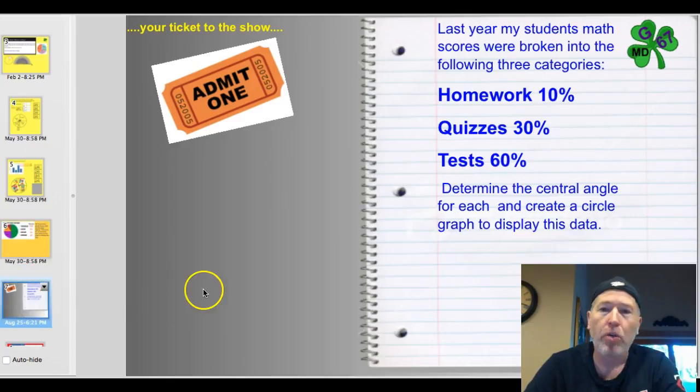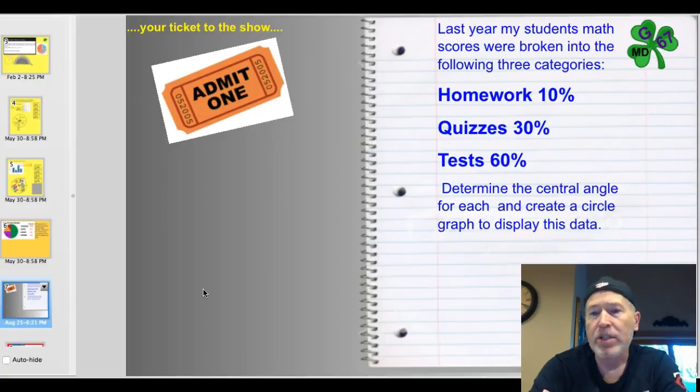Here's your ticket to the show. Last year my students' math scores were broken down into the following three categories. Homework was 10%. Quizzes were 30%. Tests were 60%. Determine the central angle for each and create a circle graph to display this data. I'll take a look at that tomorrow. I think it's important for you to see how heavily weighted tests are. And I think when you see it on the circle graph, 60% of a circle, I'll accomplish that goal.